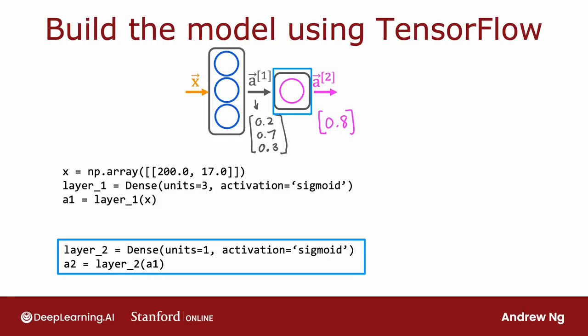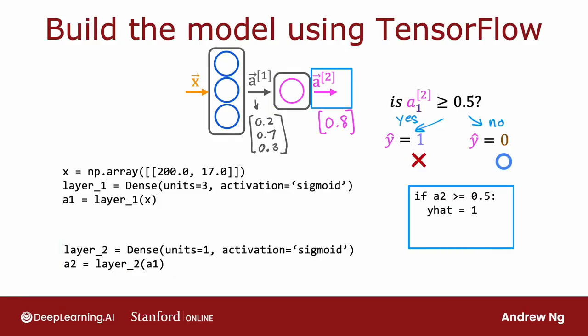Finally, if you wish the threshold is at 0.5, then you can just test if a2 is greater than or equal to 0.5, and set y hat equals to 1 or 0, positive or negative class accordingly. So that's how you do inference in the neural network using TensorFlow.